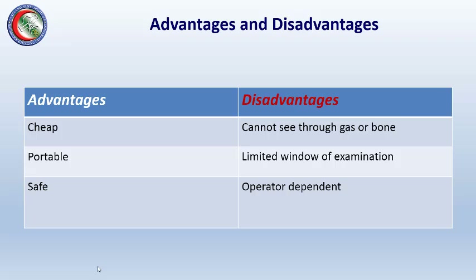Advantages of ultrasound include that it's cheap, portable, can be performed bedside, and is safe as it lacks ionizing radiation. Its main disadvantages are that it cannot see through gas or bone, has a limited window of examination, and is operator dependent — the quality of the study depends on the skill of the doctor or ultrasonographer performing the examination.